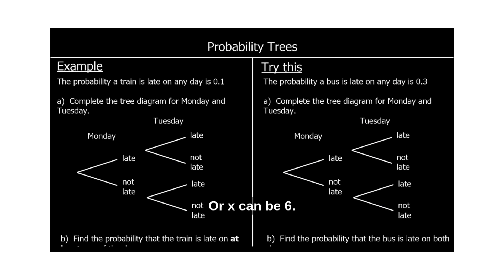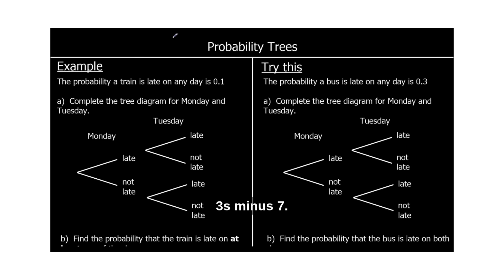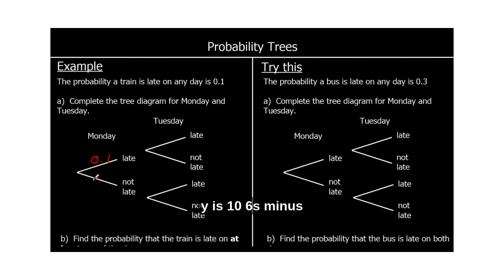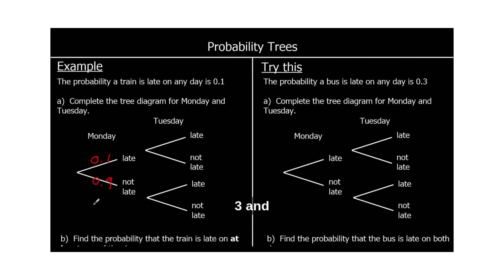Here we have another question. The probability that a train is late on any day is 0.1. Complete the tree diagram for Monday and Tuesday. So if the probability of it being late is 0.1, the probability of it not being late is 0.9. The probability of late and not late have to add up to one — all probabilities add up to one — so 0.1 and 0.9 make one whole. The probability of it not being late is 0.9, and that's the same on every day. So on Tuesday, the probability of it being late is 0.1 and the probability of not being late is 0.9.